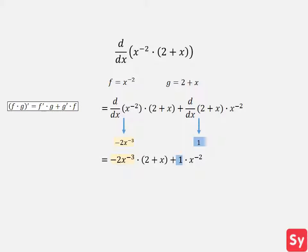Next, we plug in these values. We can now simplify this answer to equal negative 1 over x squared minus 4 over x cubed, our answer.